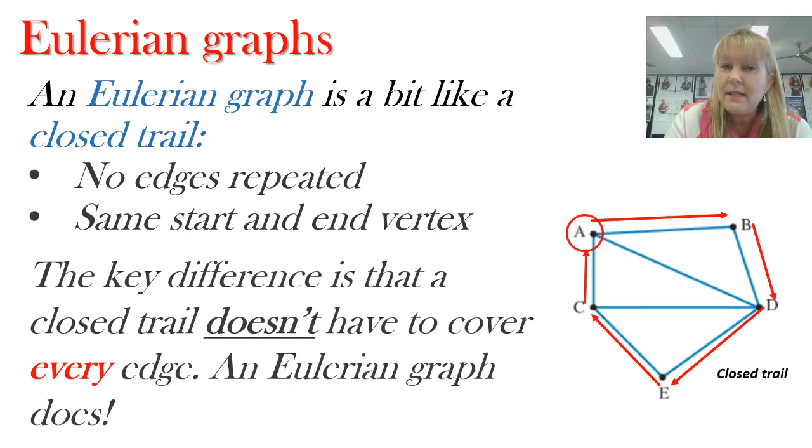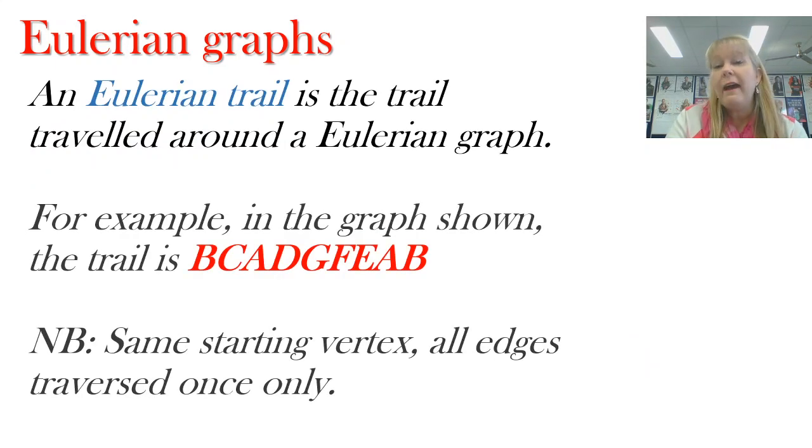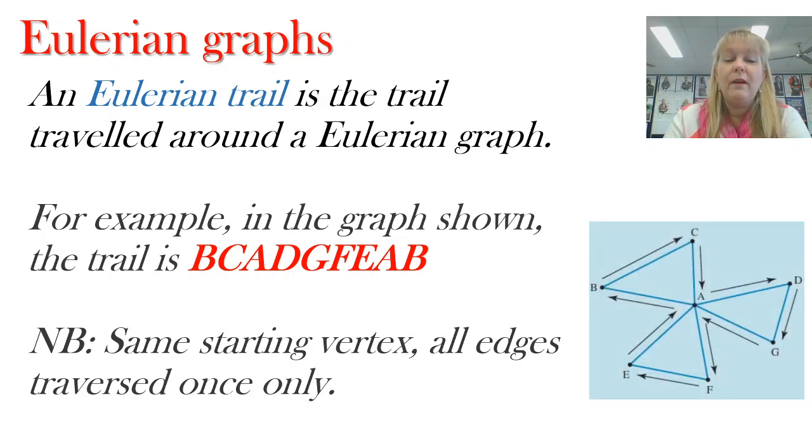But the key difference is with a closed trail I don't have to cover every edge. Notice A, D and C, D are missed in a closed trail. In an Eulerian graph I have to cover every one of those. Now the trail that I travel around an Eulerian graph is the pathway that I travel around it. So for example here I've gone and started at point B and I've traveled all the way around the graph and the pathway that I take is called the trail and it's the same starting vertex every edge only visited once.